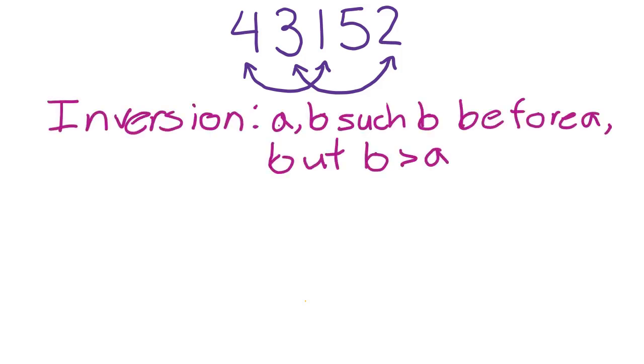An inversion in a list of numbers is a pair of numbers a and b such that b comes before a in the list, yet b is greater than a. In other words, if the list was in order, a should be in front of b as a is less than b, but instead b happens to be before a.